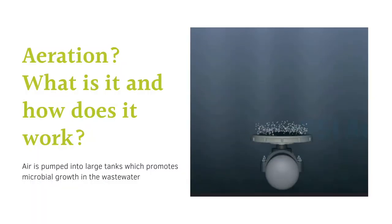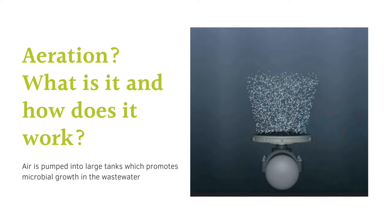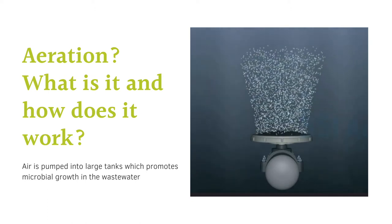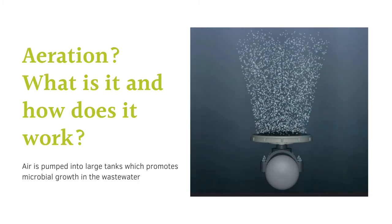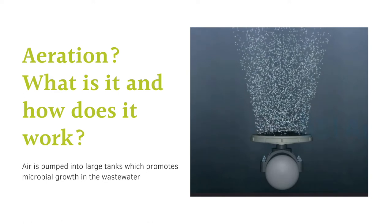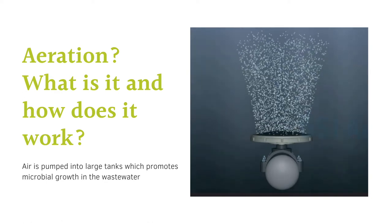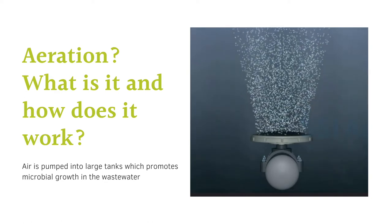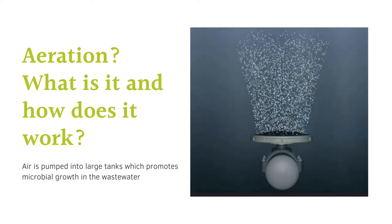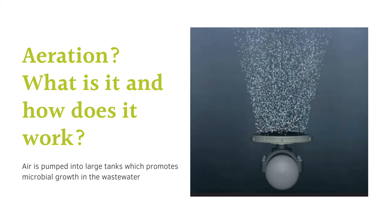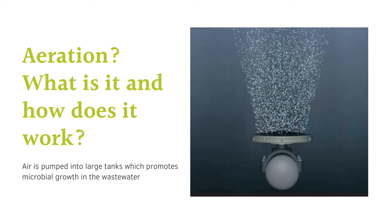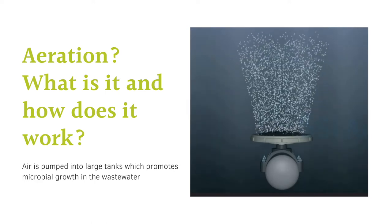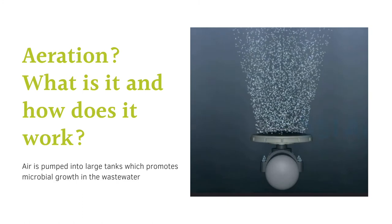Aeration — what is it and how does it work? Aeration is a vital part of the secondary treatment and activated sludge process in a wastewater treatment plant. In aeration tanks, oxygen is pushed into the diffusers, which have tiny slits on the surface that create bubbles when they come in contact with the water. The bubbles are used to feed microorganisms or bacteria in the tank oxygen, allowing them to break down organic matter much faster than they would without the additional oxygen.